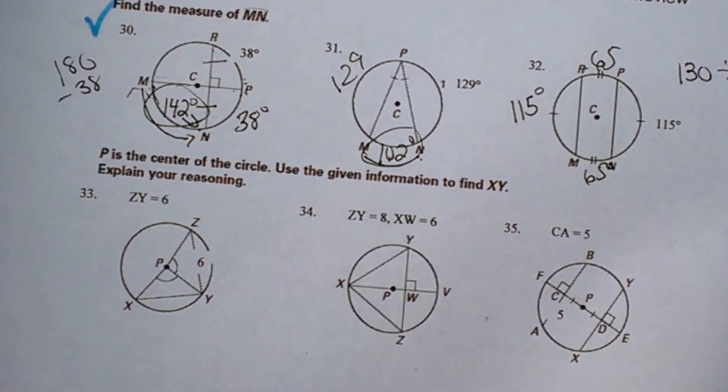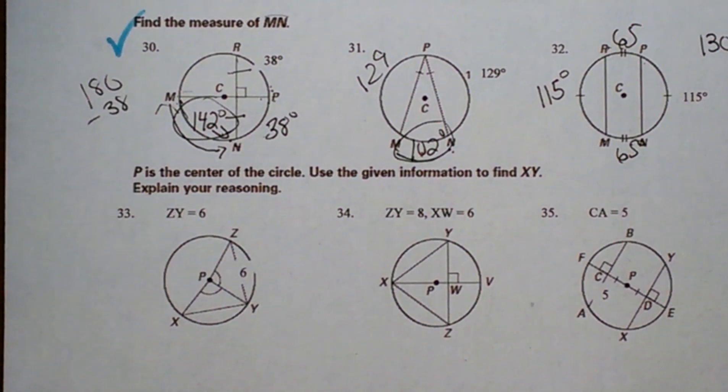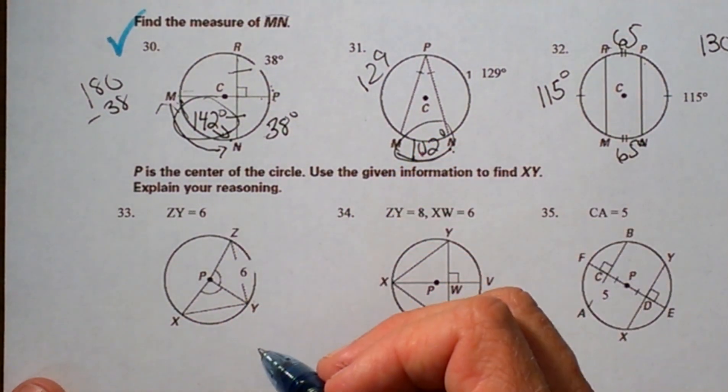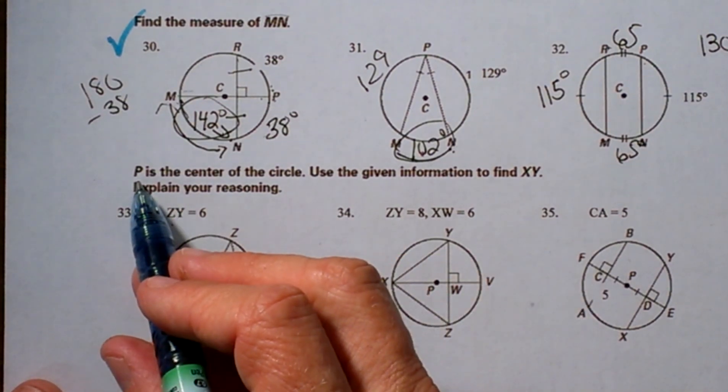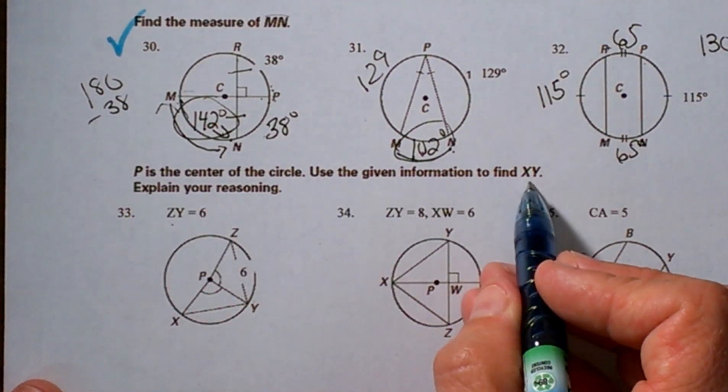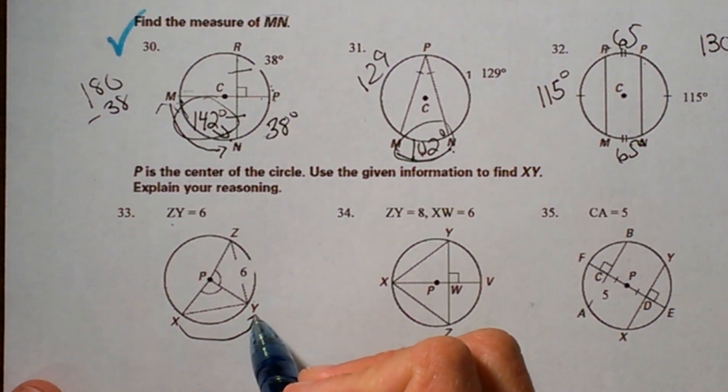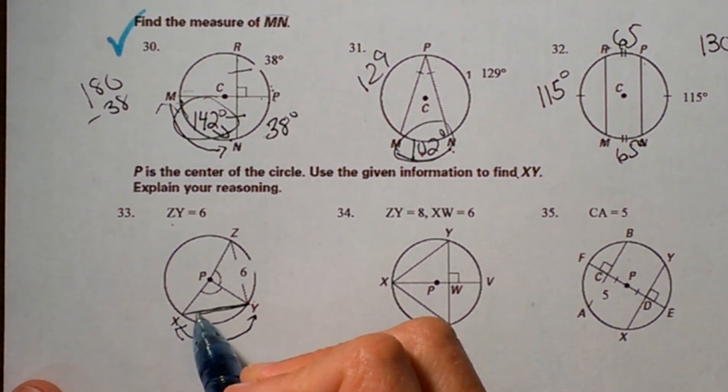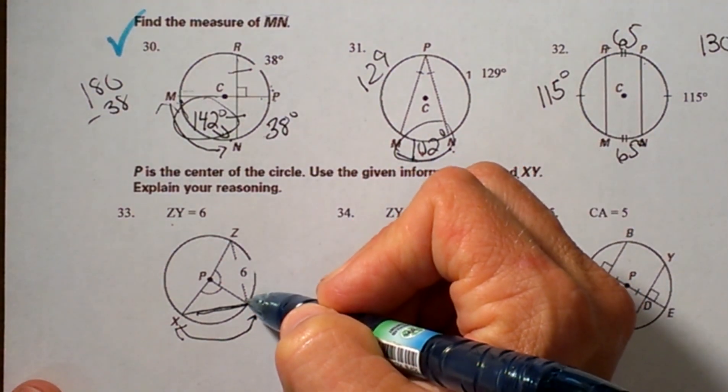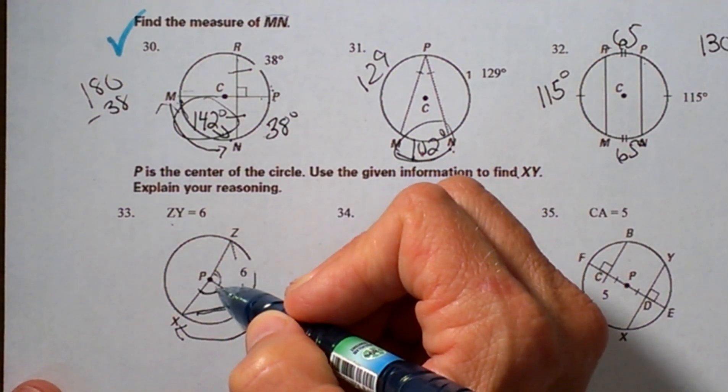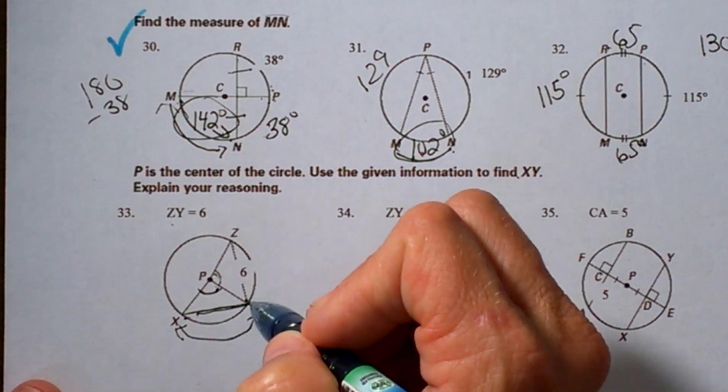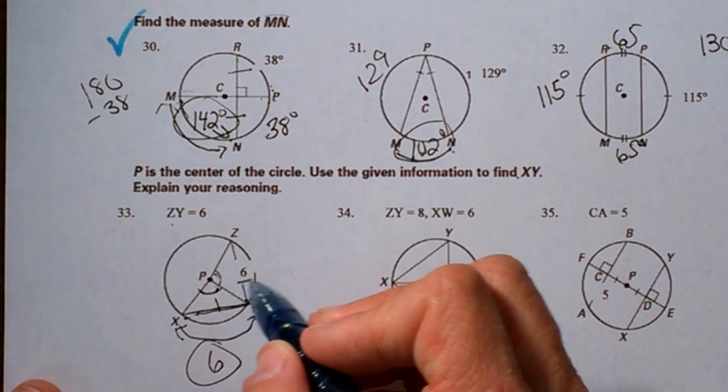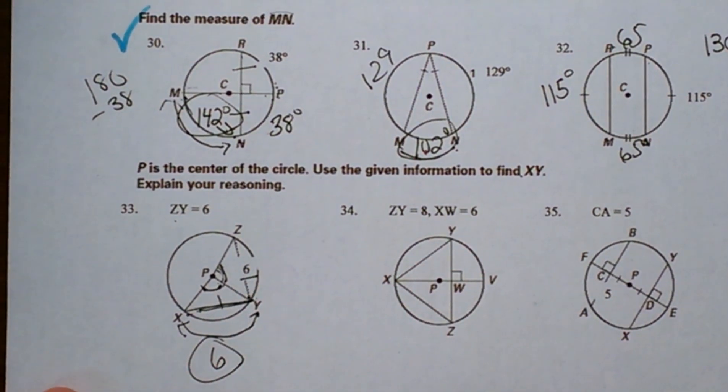Next one over is number 33. We're given a chord right here: ZY is 6, and we're trying to find XY. Well, XY is actually just a segment, so we're trying to find the length of the segment. So if ZY is 6 and we know these two central angles are the same, that means that this segment must also be 6 because they're congruent to each other because they have the same central angle.